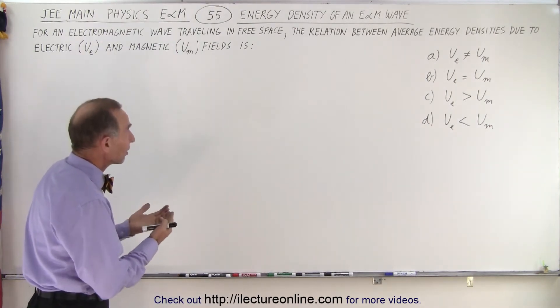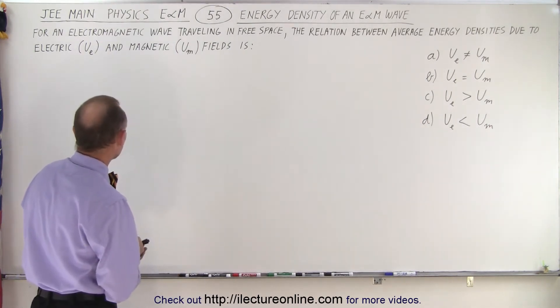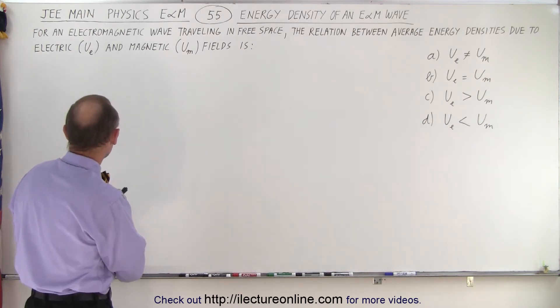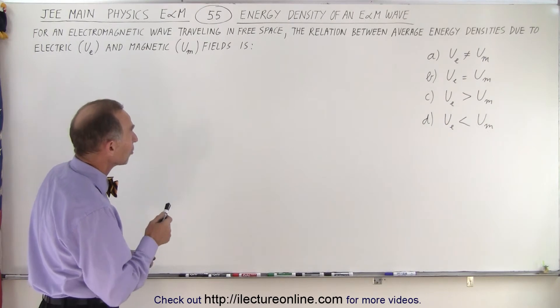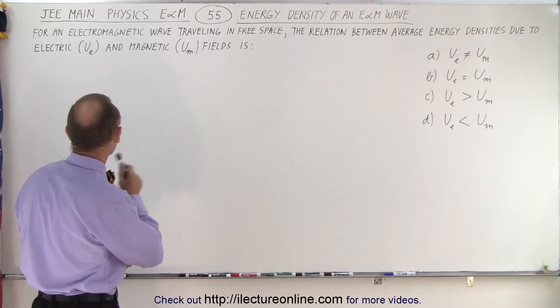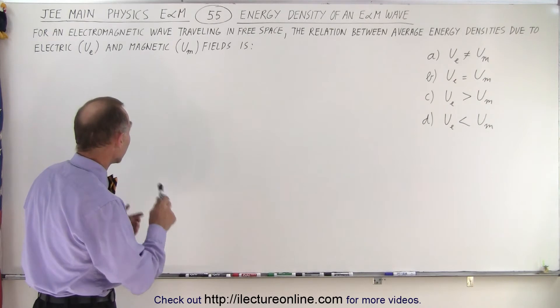Well, it deals with the energy density of E and M waves, electromagnetic waves. The question goes: for an electromagnetic wave traveling in free space, the relation between the average energy densities due to the electric and magnetic fields is...